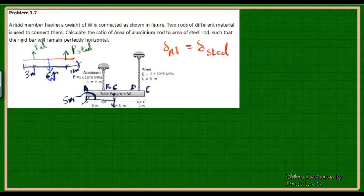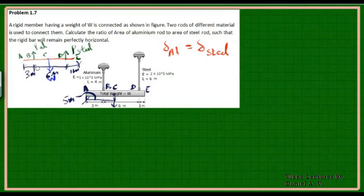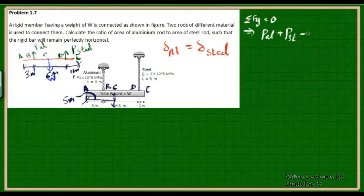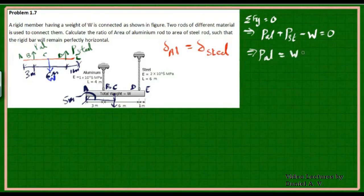Since this system is in static equilibrium, it must satisfy the equations of equilibrium. All forces in the system are vertical, so we only need ΣFy = 0. Applying ΣFy = 0: P_aluminium acting upward plus P_steel acting upward minus W equals zero. This gives us the first equation: P_aluminium = W − P_steel.